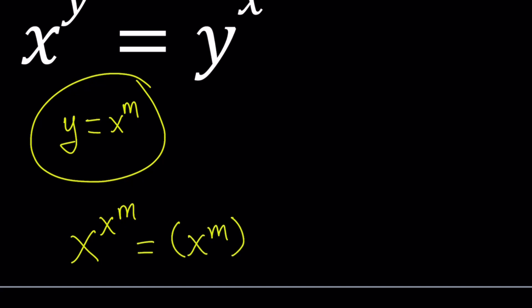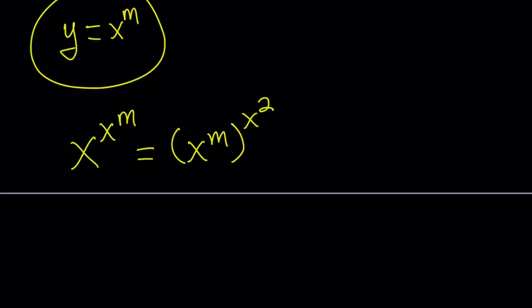And then we get the following equation, where we multiply the exponents. So we get x to the power x to the power m equals x to the power m times x squared.